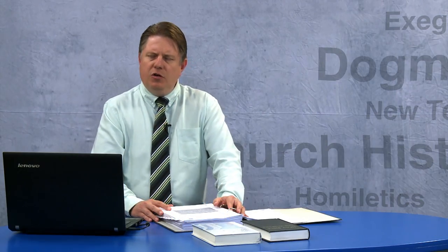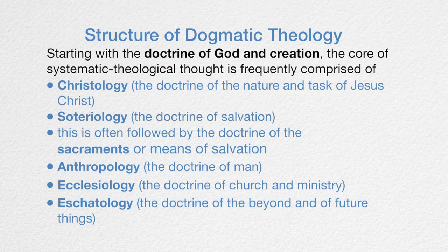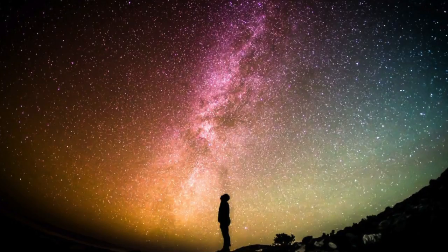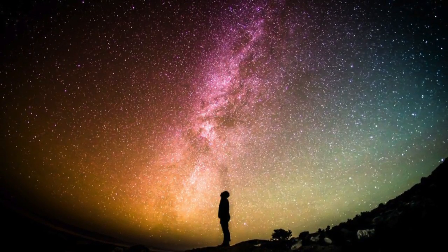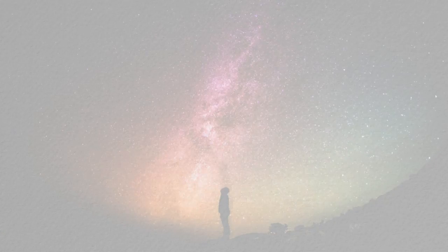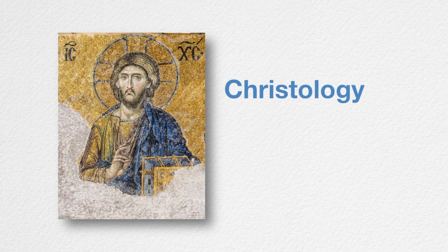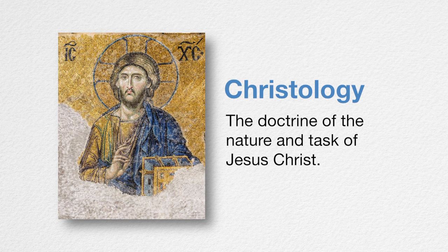Now if we look at the structure of dogmatic theology — the major topics it investigates — normally it starts with God: who is God and creation, and what is God's relationship to creation. Another aspect is Christology, the doctrine of the nature and task of Jesus Christ. It investigates who Jesus is, what his nature is — is he God, is he man, is he both, and how does that work — and what was his task, what did he come to achieve.